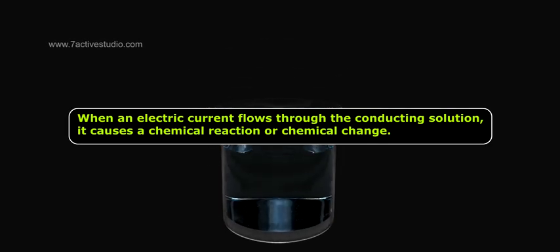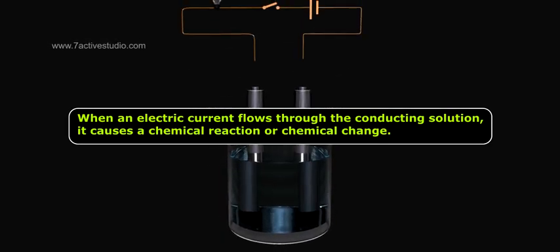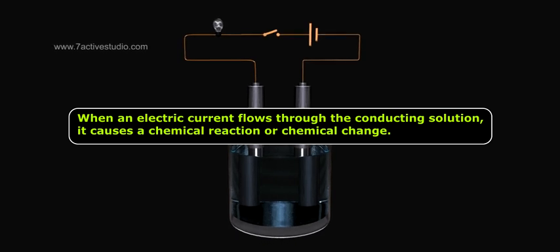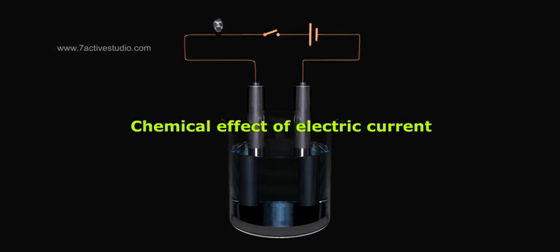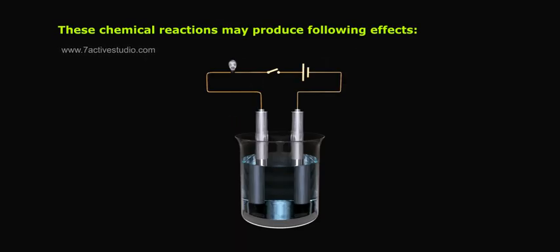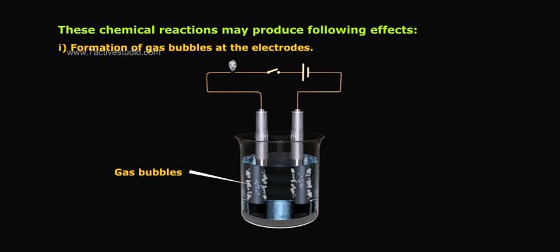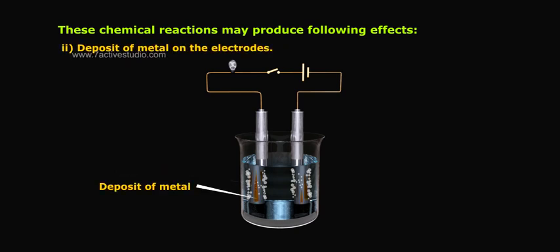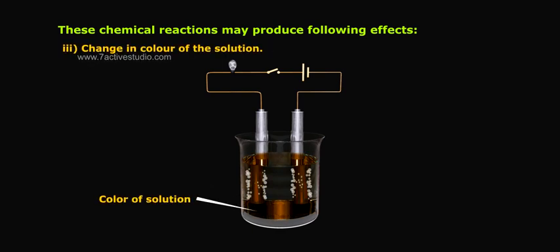Chemical effects on electric current. When an electric current flows through the conducting solution, it causes a chemical reaction or chemical change. This is called chemical effect of electric current. These chemical reactions may produce following effects: 1. Formation of gas bubbles at the electrodes, 2. Deposit of metal on the electrodes, 3. Change in color of the solution.